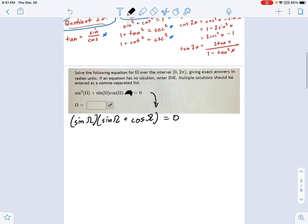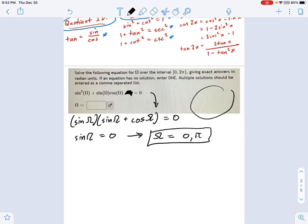And at this point, now we have two factors times each other. That's great. I can start solving this one. Sine omega equals 0. Well, that means omega equals 0 and pi. And I got that from what I know about the unit circle. Remember, where are the sine values equal to 0? Those are the y coordinates. There they are, 0 and pi.